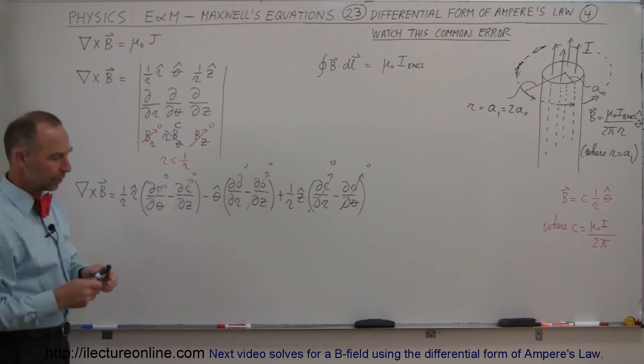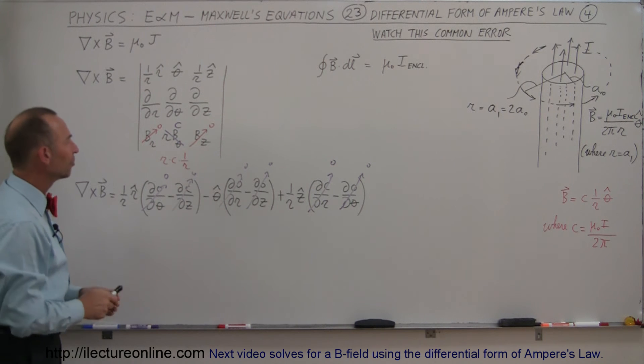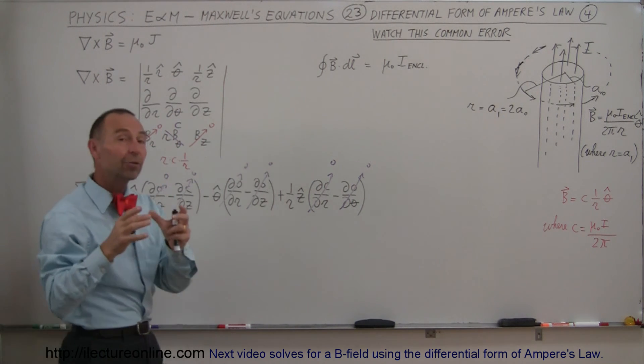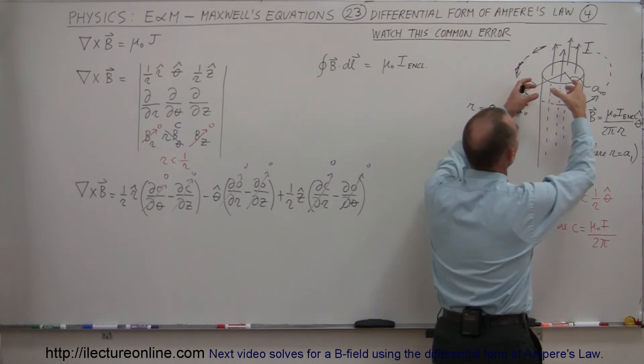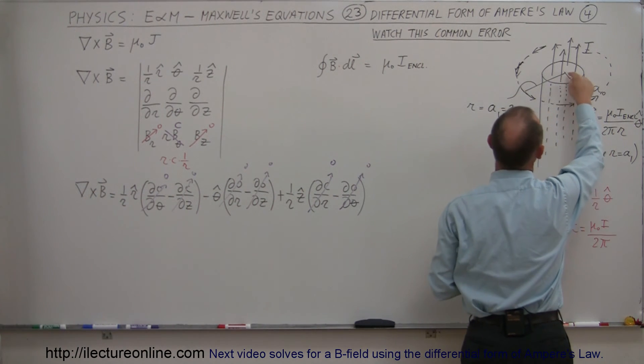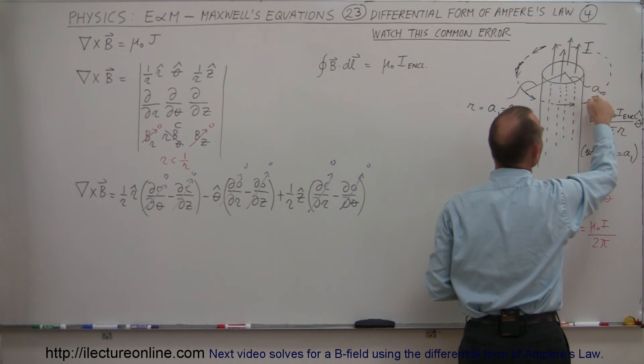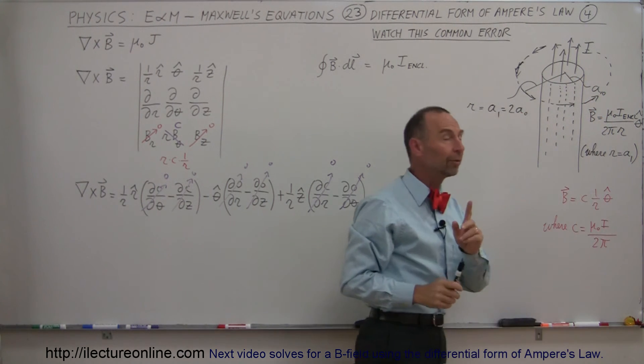Well, there's one trick to that. If you're going to use the differential form of Ampere's law, then you have to remain within the region where the current is flowing. In other words, you can find the B field anywhere inside this region, but you can't find it outside the region. In that case, you're better off using the integral form of Ampere's law.